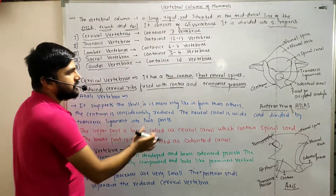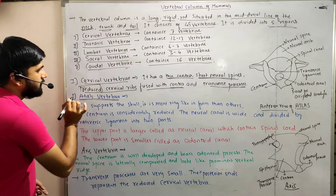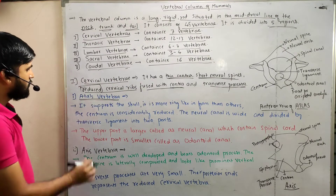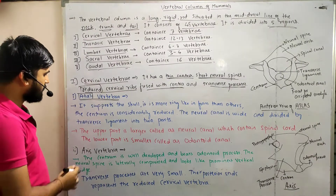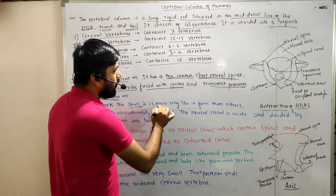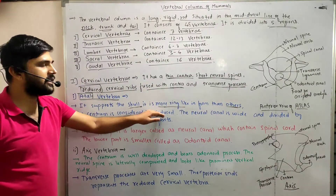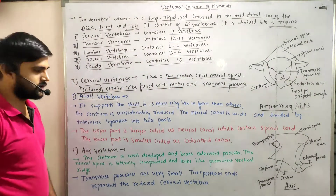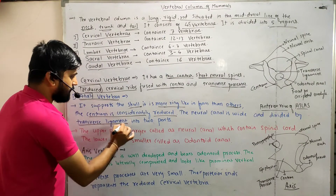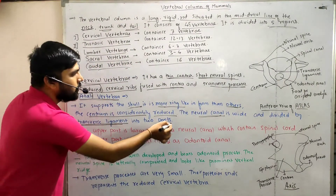The first cervical vertebra is the atlas vertebra. It supports the skull and is more ring-like in form compared to other vertebrae. The centrum is considerably reduced. The neural canal is wide and divided by a transverse ligament into two parts.